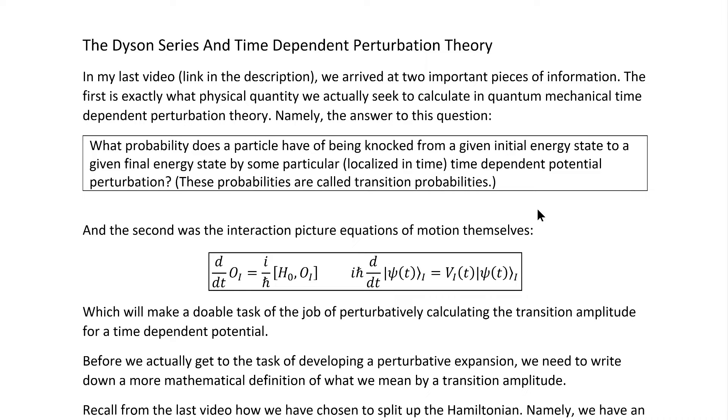The first is exactly what physical quantity we actually seek to calculate in quantum mechanical time-dependent perturbation theory, because it differs from time-independent perturbation theory. Namely, we seek the answer to this question: what probability does a particle have of being knocked from a given initial energy state to a given final energy state by some particular localized-in-time time-dependent potential perturbation, where these probabilities are called transition probabilities.